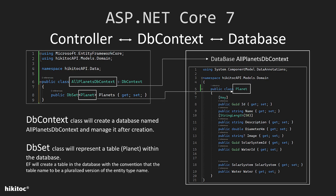When a controller sends a task to be completed, the DbContext will take appropriate actions. These actions go beyond CRUD operations and include creating and managing connections to the database, tracking changes to entities, and persisting changes to the database. The Planet class, on the other hand, will become a table within this database, thanks to the DbSet class.